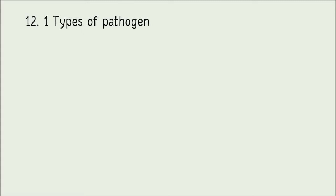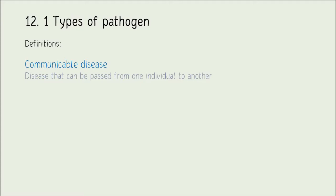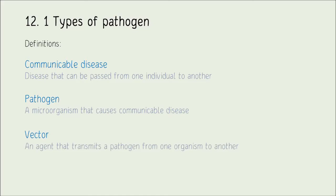The first section looks at types of pathogens. First, let's ensure we're happy with a few definitions from GCSE. A communicable disease is a disease that can be passed from one individual to another. A pathogen is a microorganism that causes such disease. A vector is an agent that transmits a pathogen from one organism to another. Vectors can be non-living — things like air, water, or soil — or living, such as insects, the infamous example being the mosquito.